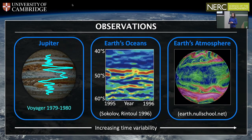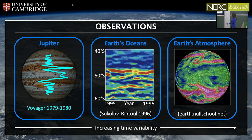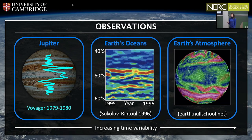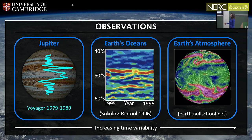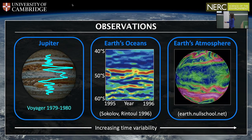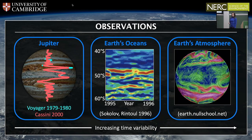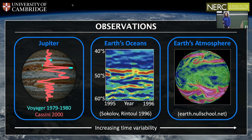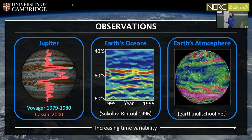Observations of jet streams throughout the solar system reveal different types of variability and also different timescales. On Jupiter, the jets are observed to be very steady in both space and time. Just over 40 years ago, the Voyager mission to Jupiter collected data on the strength of these zonal winds, showing sharp eastward and westward peaks. About 20 years later, the Cassini mission also collected data, and the two datasets are remarkably similar, suggesting the strength, positions, and numbers of these jets have remained virtually constant over these two decades.